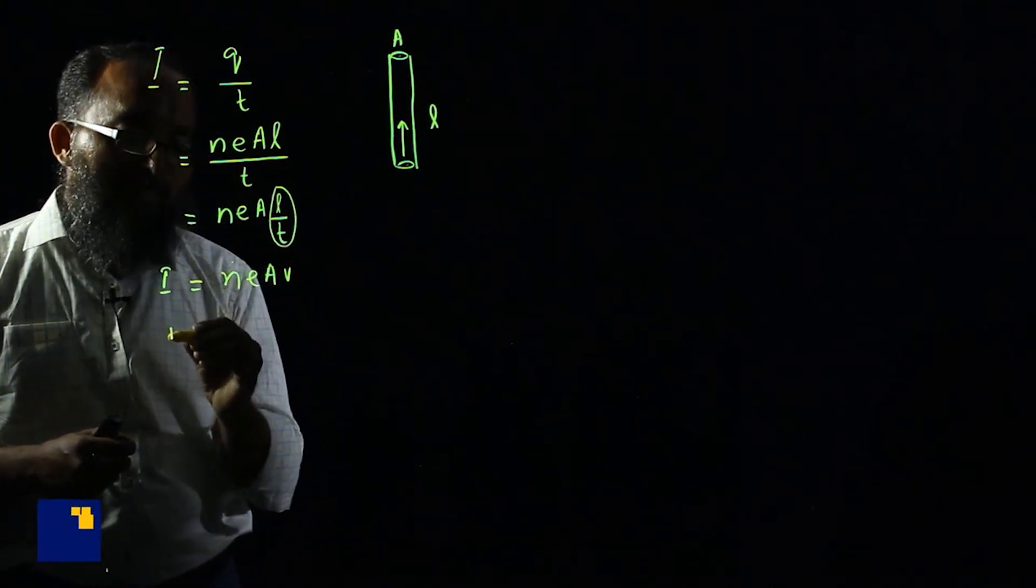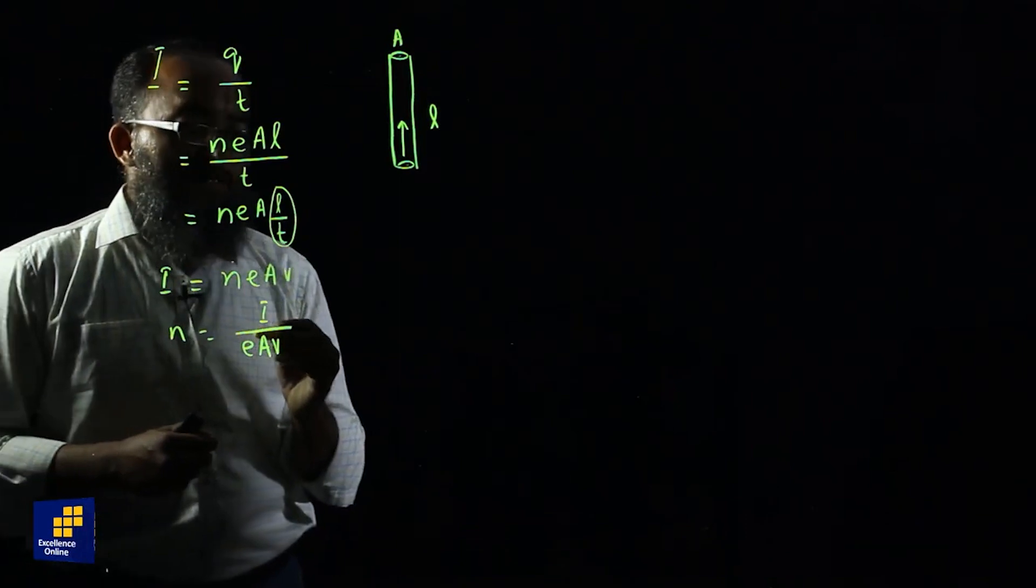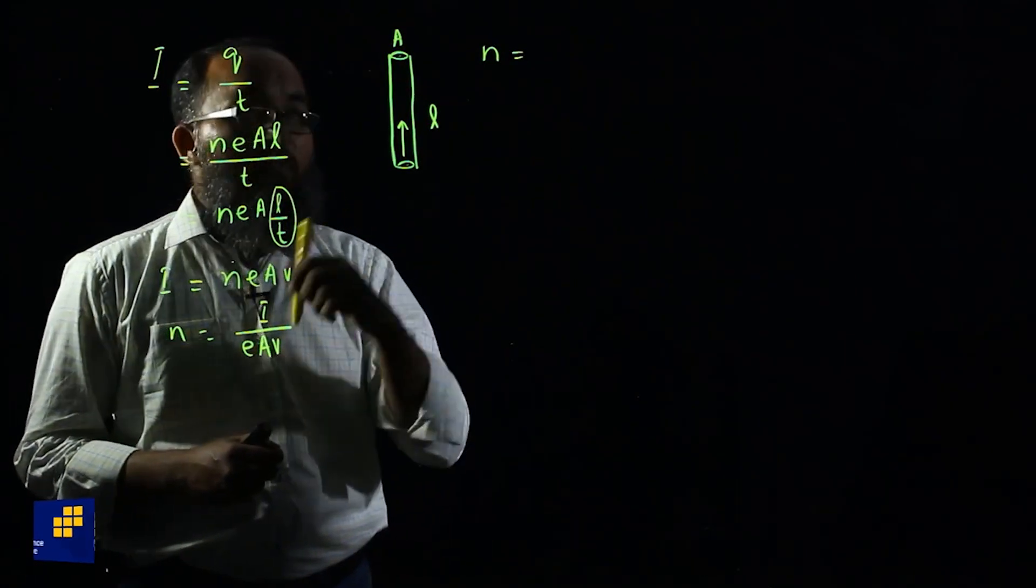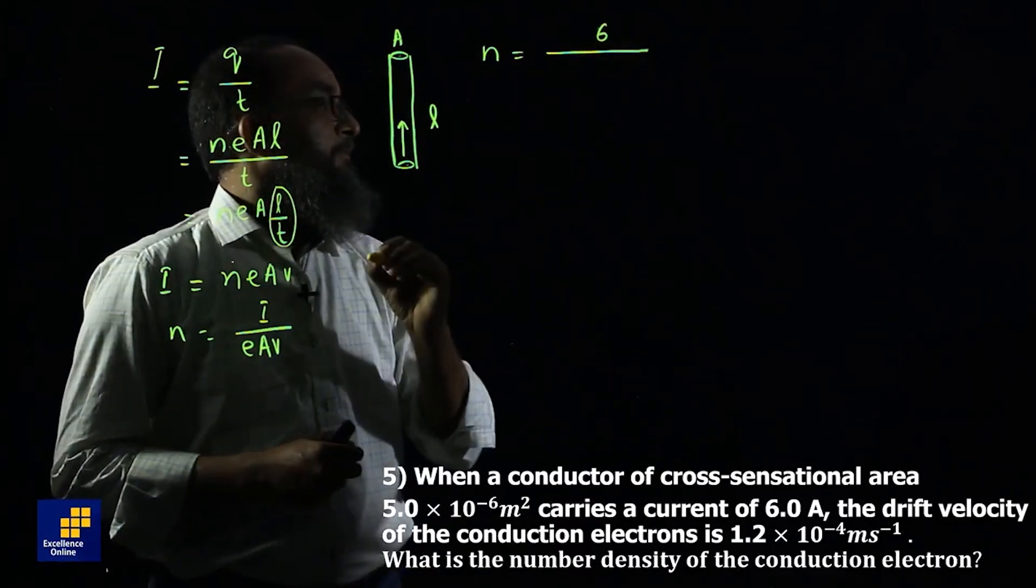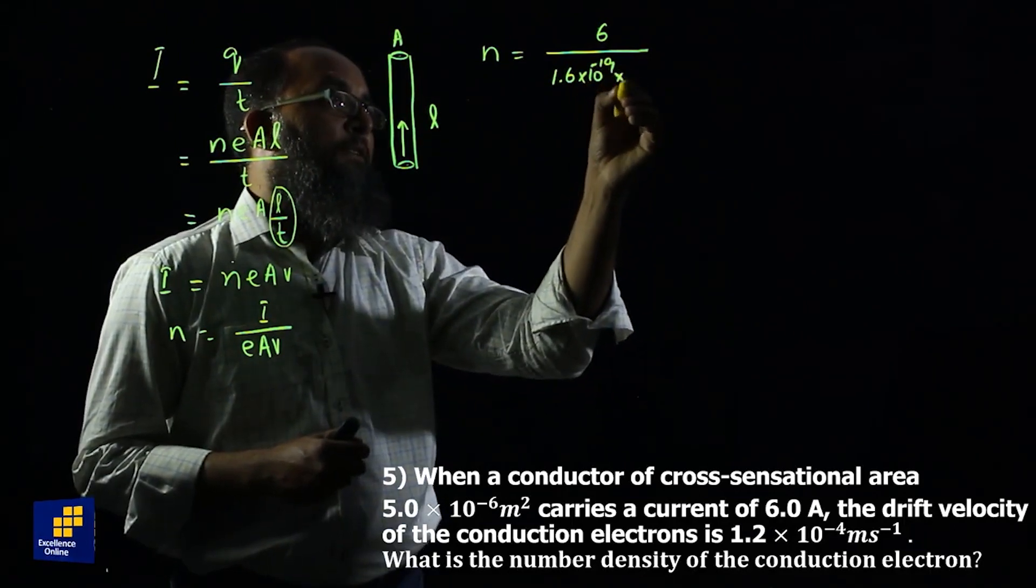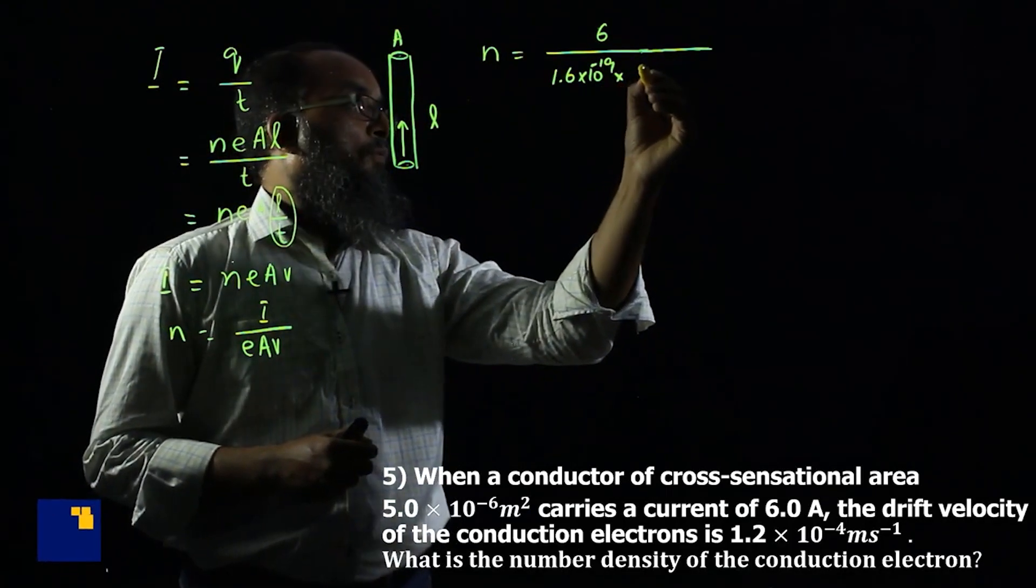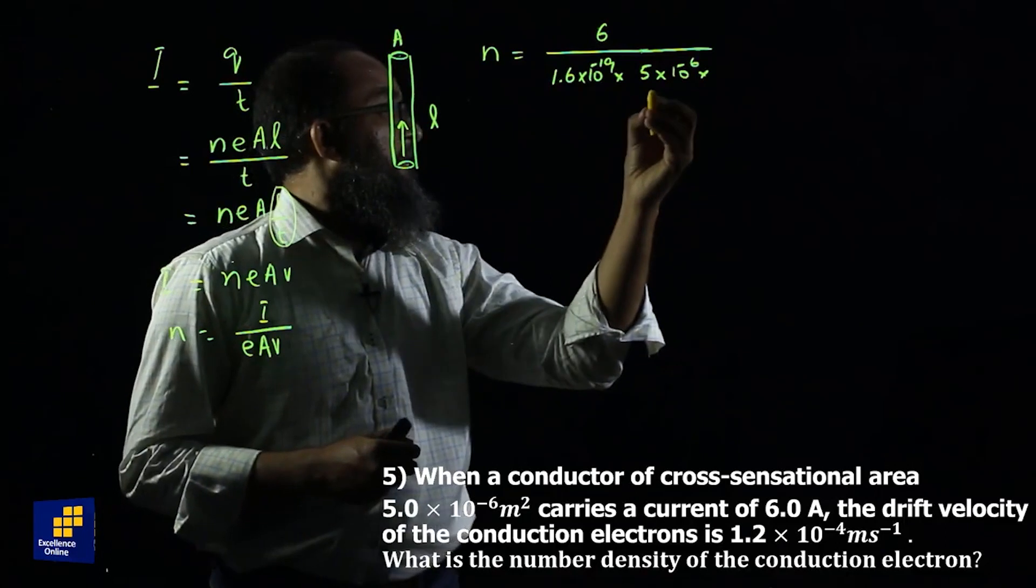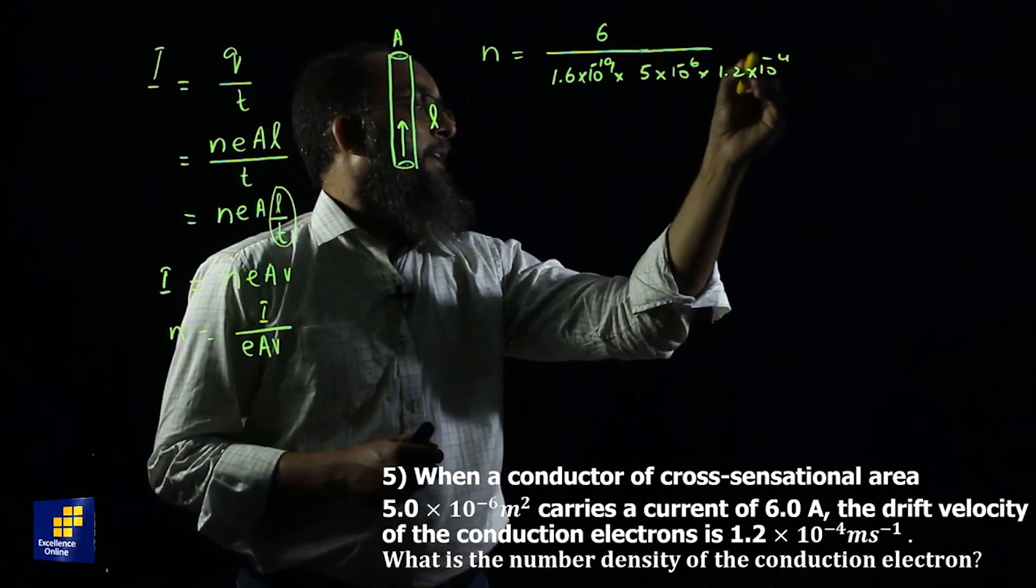If we arrange for N, we get N is equal to I over E A V. Let's substitute the values of all these variables. N is the number of electrons per unit volume. The current flowing through the wire is 6. Charge of one electron is 1.6 exponential minus 19. Area of cross section of the wire is 5 exponential minus 6. And the drift velocity of the conduction electrons is 1.2 exponential minus 4.